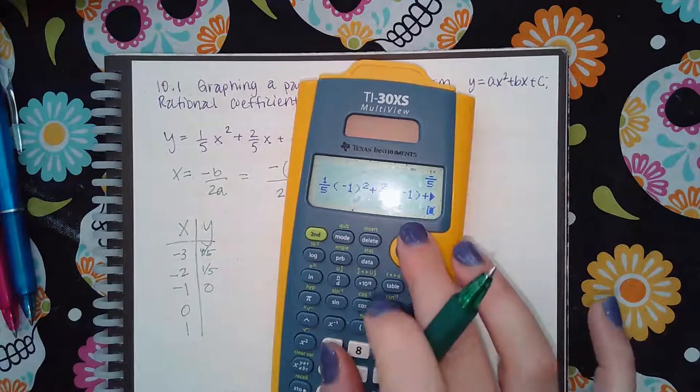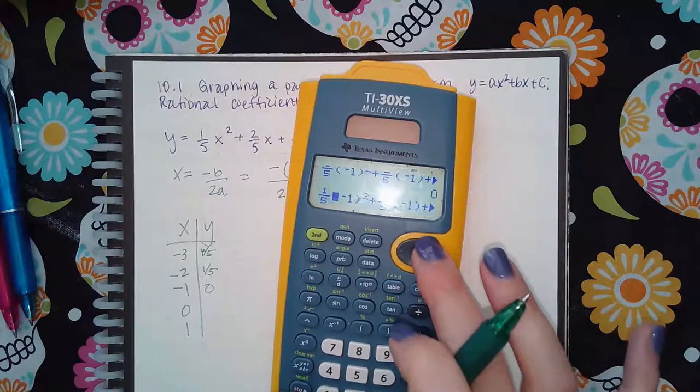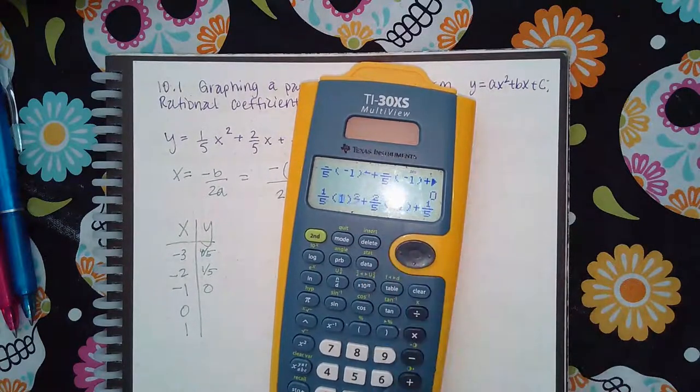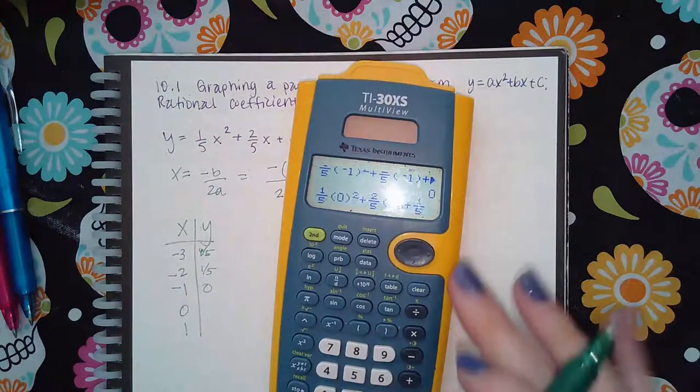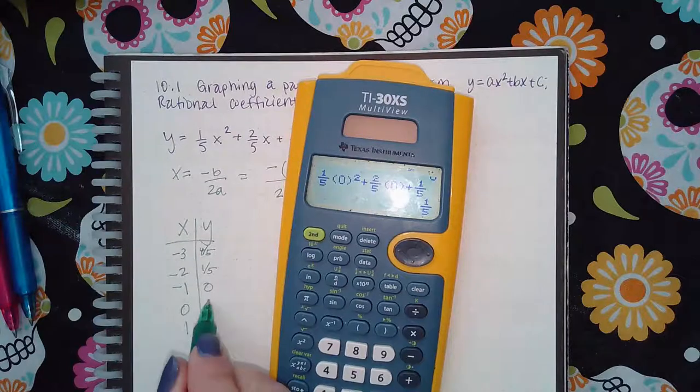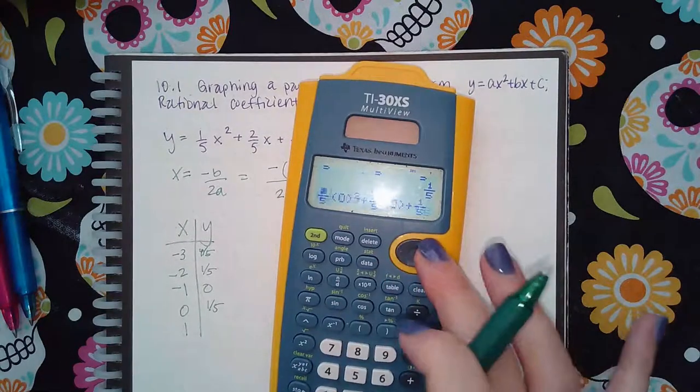Then I'm going to plug in 0. I get 1 fifth, and then I'm going to go back and plug in positive 1 this time.